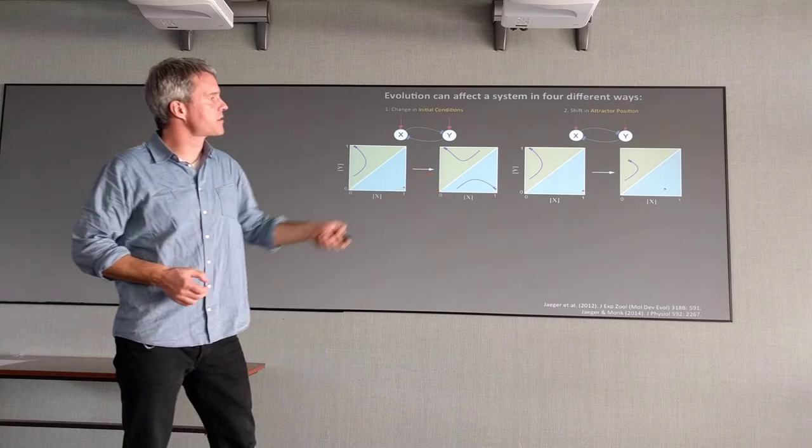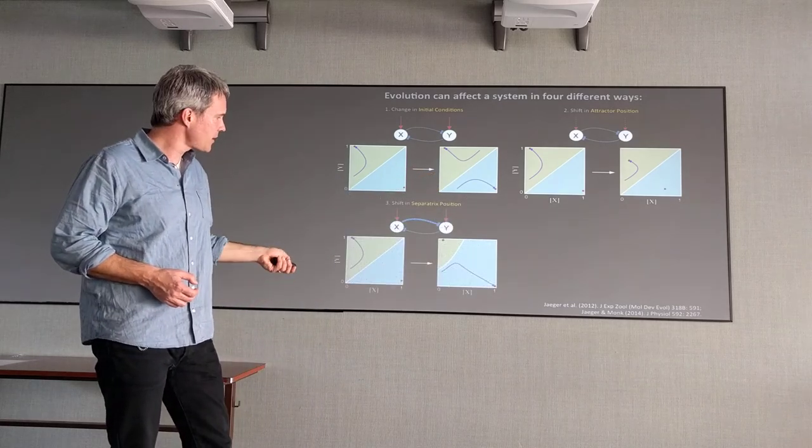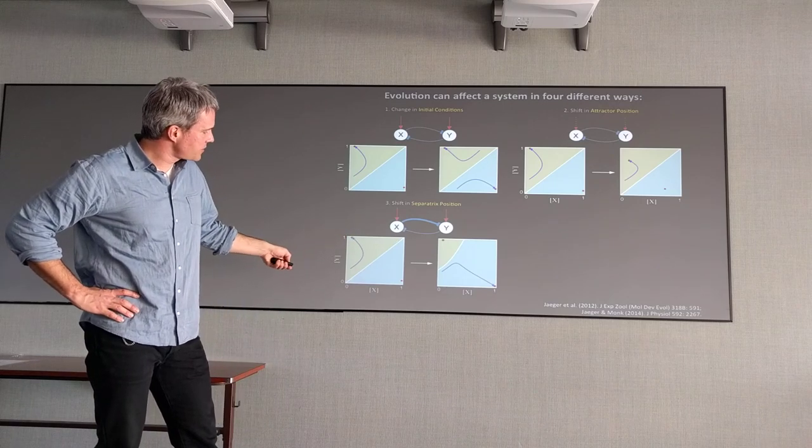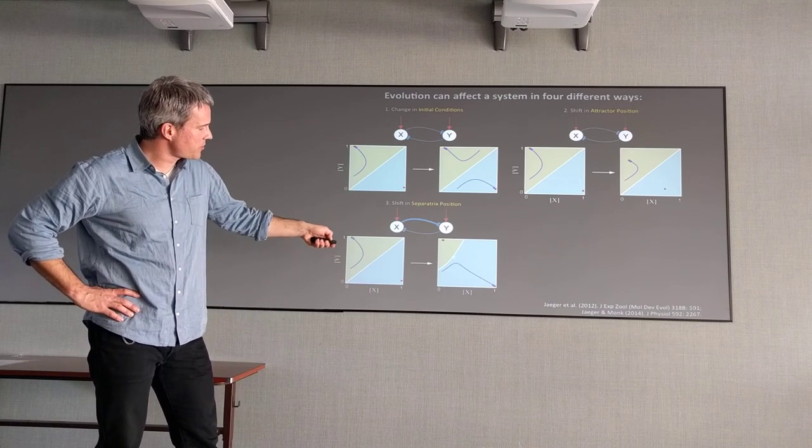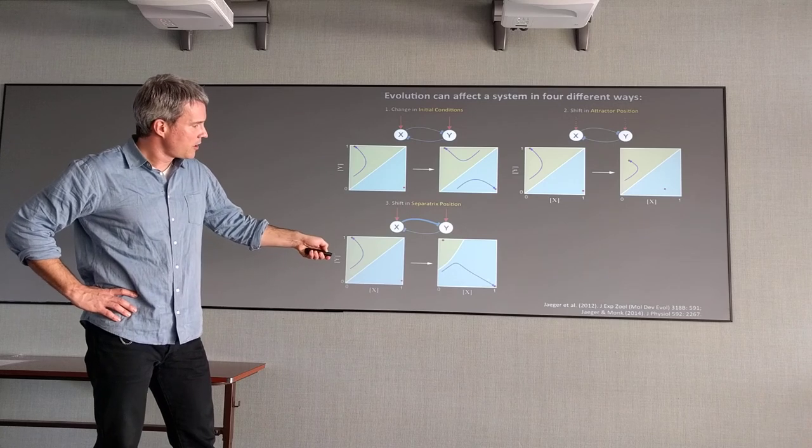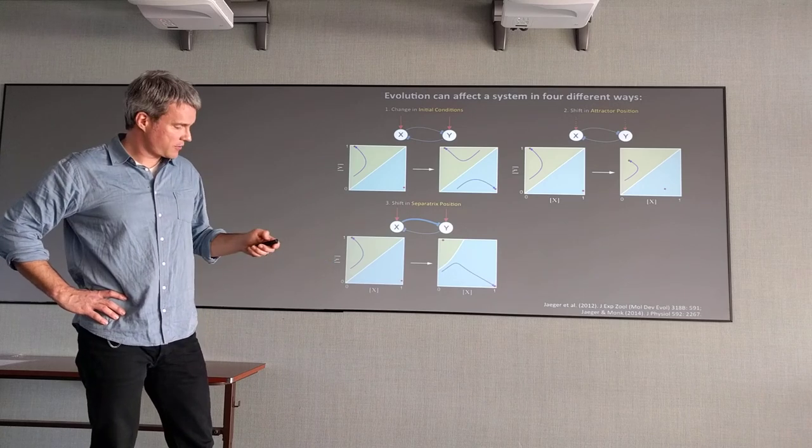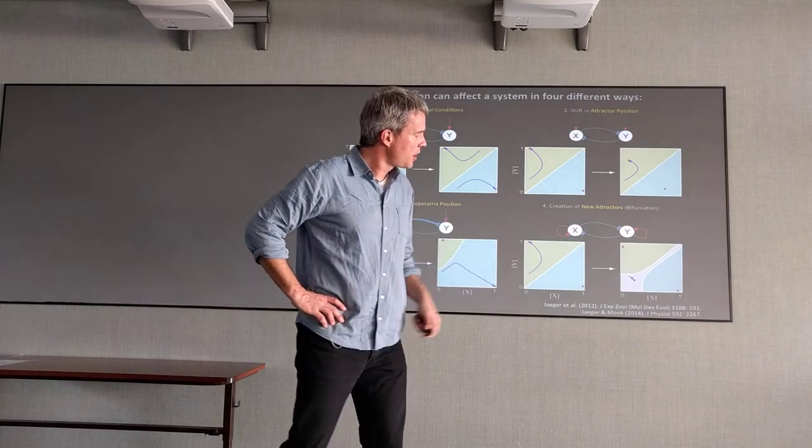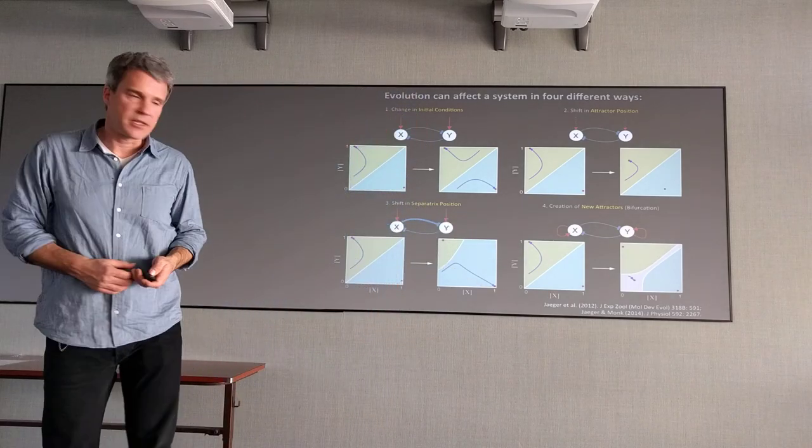There will just be a little less of the green factor than before. If you change the symmetry of these interactions, you can change the position of the separatrix, and suddenly if you start here, you fall into a different basin of attraction. And lastly, you can have bifurcations just like I showed you before. You have a new attractor state and you get something completely new.